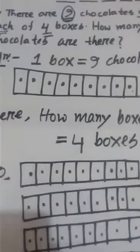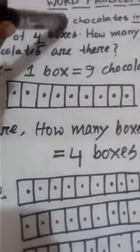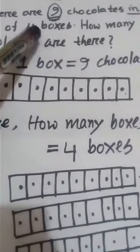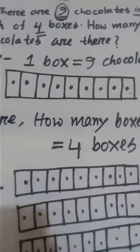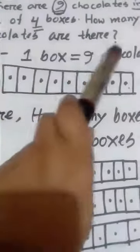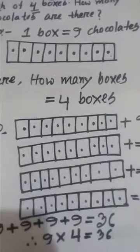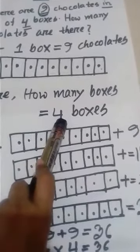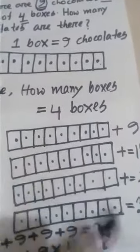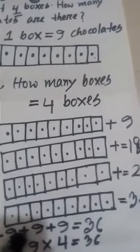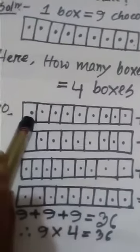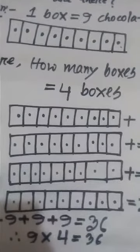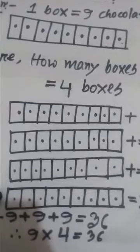So, in each box, how many chocolates? 9 chocolates. And we find out the number of chocolates in 4 boxes. 1 box equals 9 chocolates. How many boxes here? 4 boxes. In each box, how many chocolates? 9 chocolates. So: 1st box — 9 chocolates. 2nd box — 9 chocolates. 3rd box — 9 chocolates. 4th box — 9 chocolates.